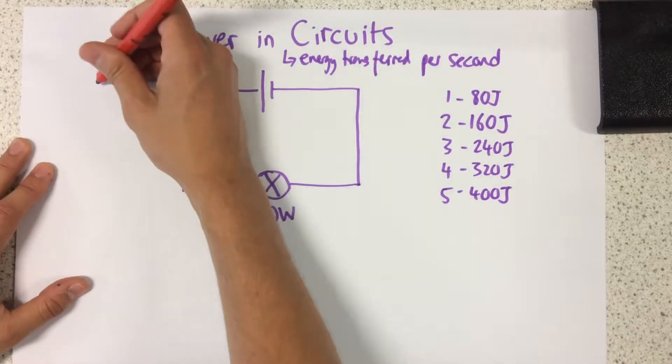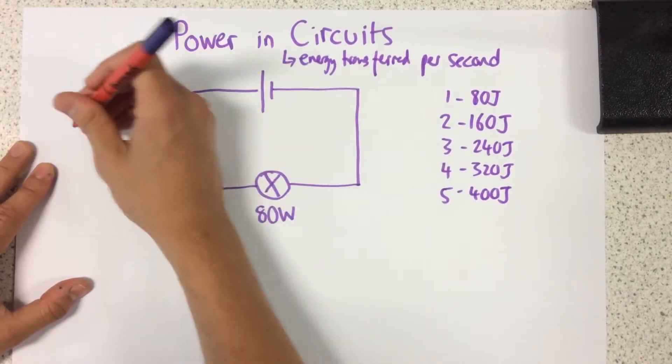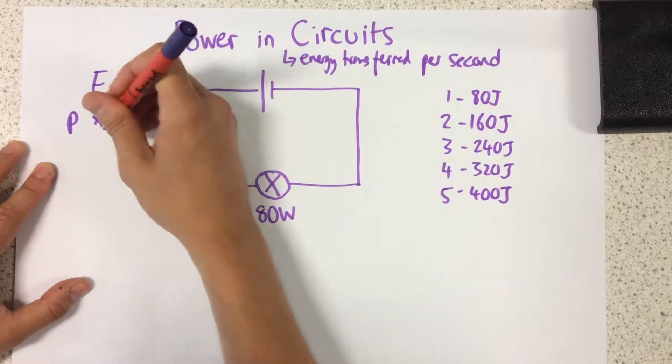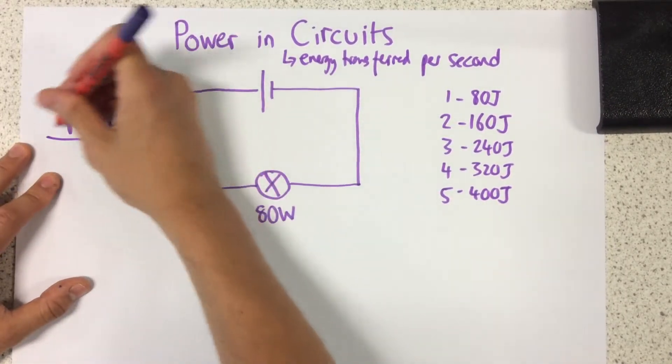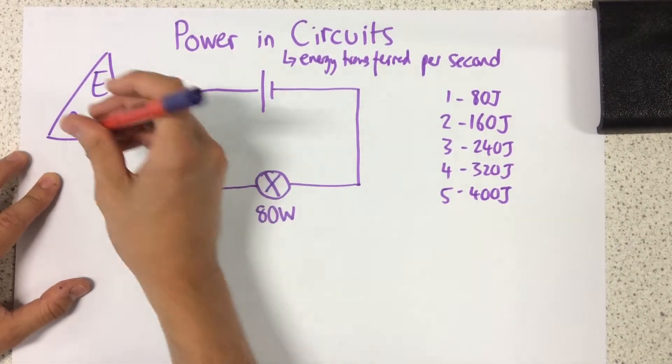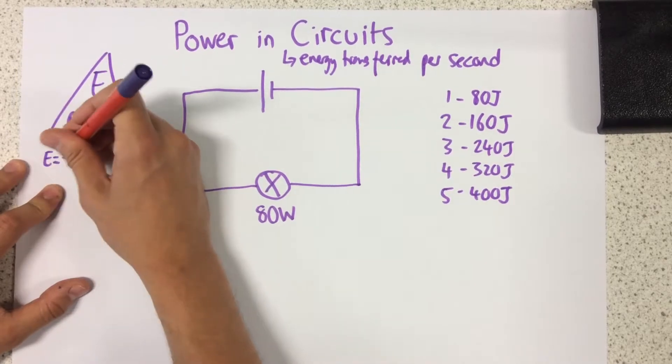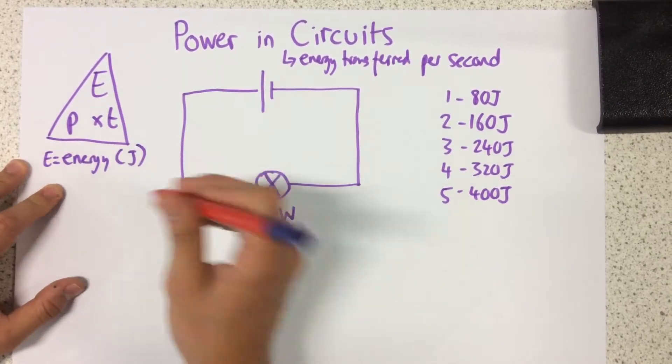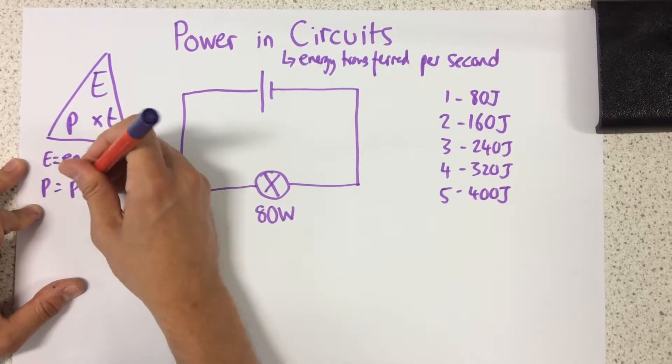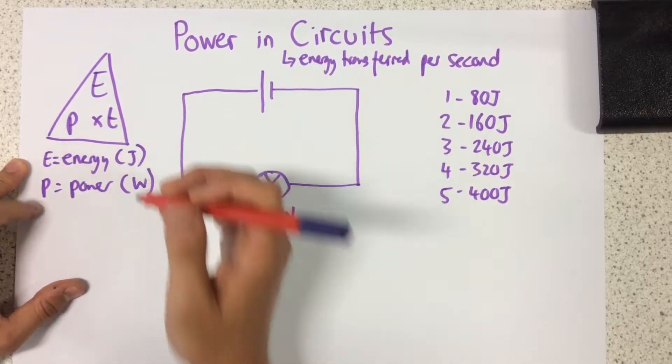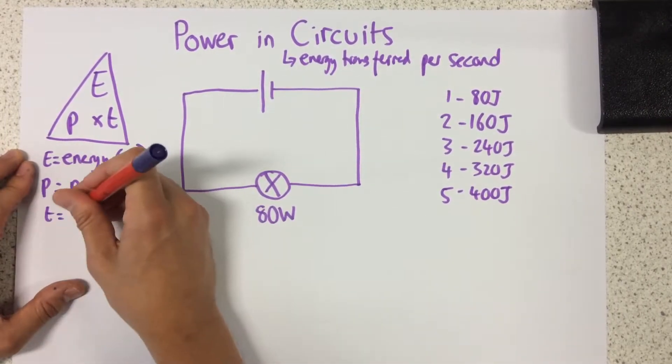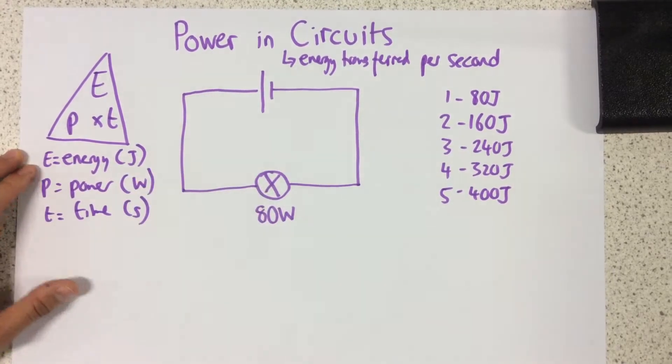Now, the equation triangle that we need to know for this one for power is this right here. There's actually a few different equations, but we'll look at this one first. So E is energy transferred, which is in joules. P is power, which is measured in watts. And finally, T is time, and that's measured in seconds.